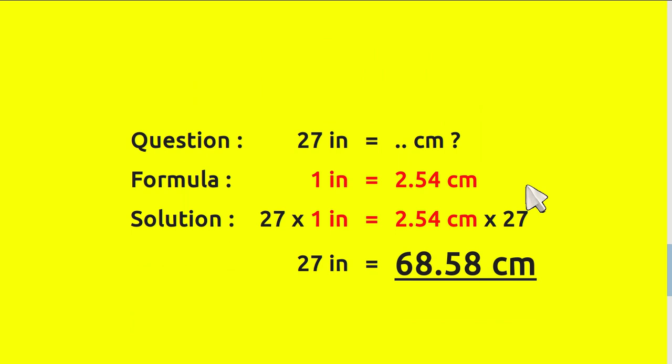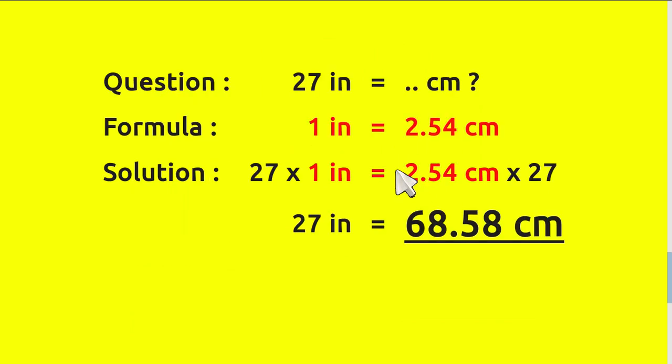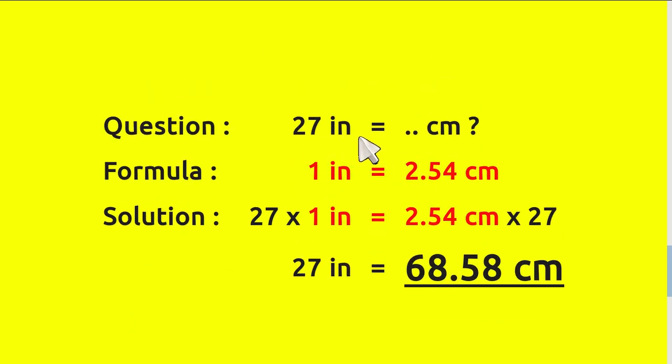And this is the answer section. First, just write again the question: 27 inches equals how many centimeters? And this is the formula, just like what we have before. And this is the solution. First, just write again the formula, and then we multiply—we multiply 1 inch with 27 and 2.54 centimeters with 27 as well.